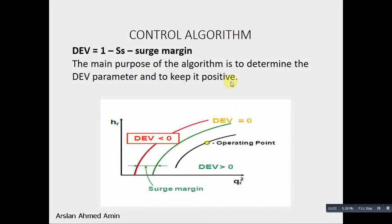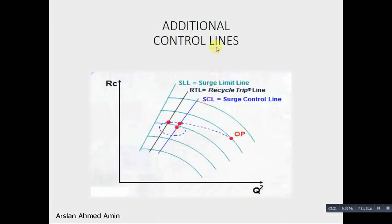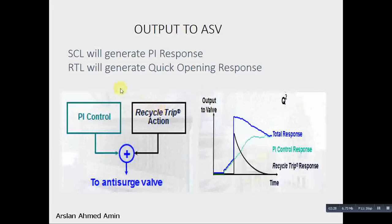Now deviation is equal to 0 on our desired line. And the deviation is positive in the green zone or the safer zone, and the deviation is negative on the left side. So the algorithm keeps the deviation parameter positive by opening the recycle valve. The surge controller will generate the PI response and recycle trip line will generate the quick opening response. And the total response would be PI control plus recycle trip protection.